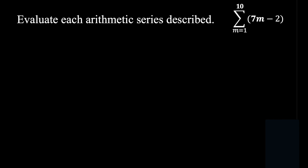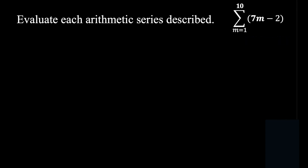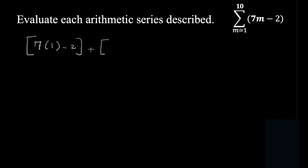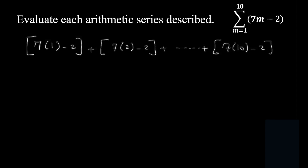Let's look at this type, which is given in sigma form. They said evaluate the arithmetic series written as sigma from m equals 1 to 10 for 7m minus 2. This means we expand it as 7(1) minus 2, plus 7(2) minus 2, continuing until the last term which is 7(10) minus 2, and then add them all together to get the final sum.